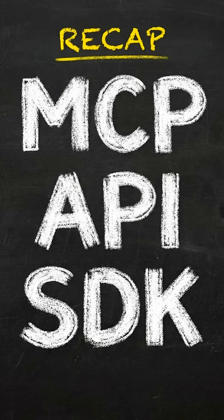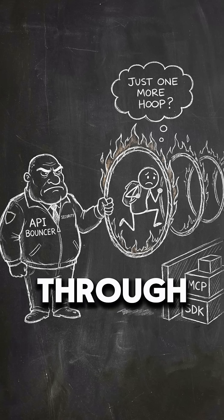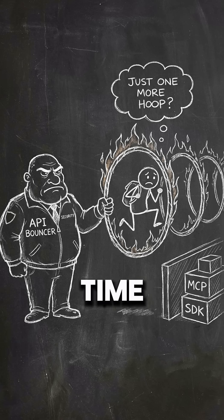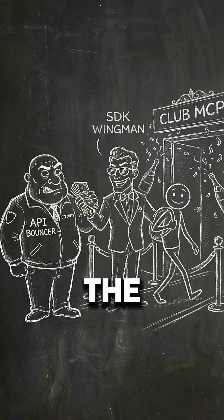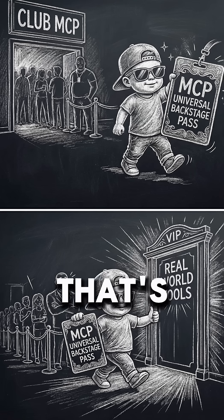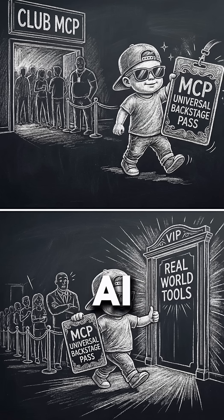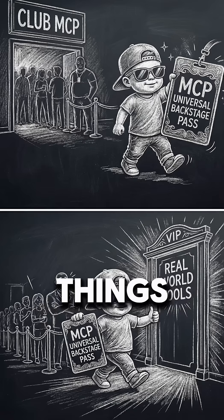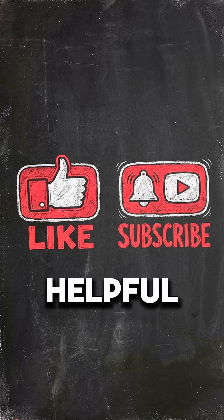So here's the quick recap. API is the raw, unforgiving bouncer who makes you jump through hoops every time. SDK is your smooth-talking buddy who bribes the guy and gets you in easy. And MCP — that's the universal backstage pass that lets the AI skip the line, grab what it needs, and actually get things done without you babysitting it. Like and subscribe if you found this helpful.